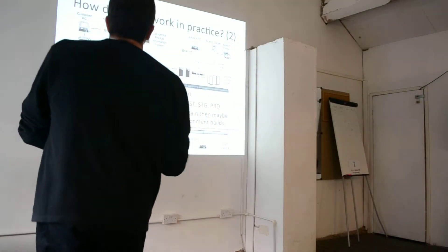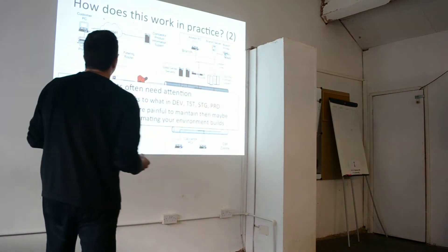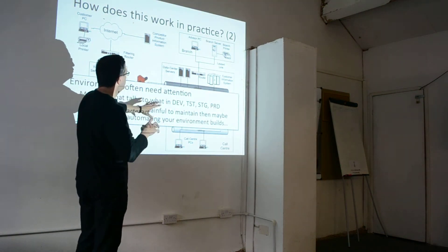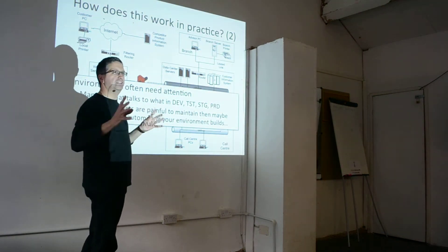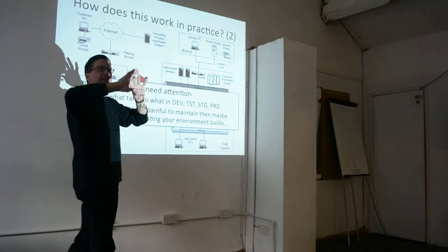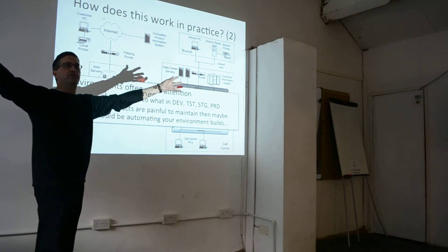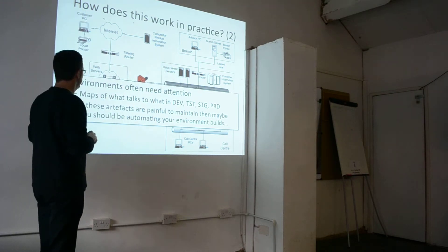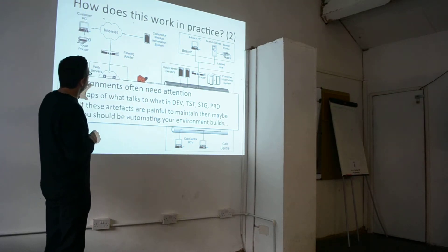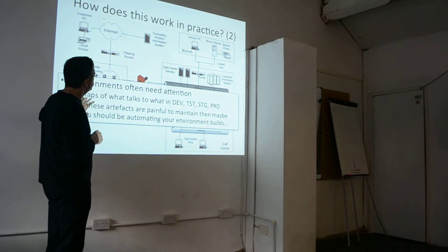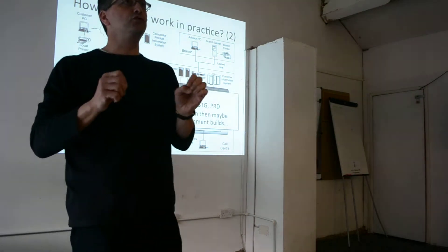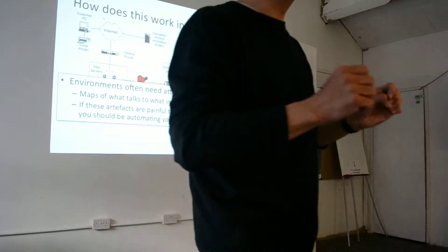Another area that often needs attention is environments. Maps of what talks to what in dev, test, staging, production. Again, this is a big 'here be dragons' area for a lot of people — 'we don't know what happens to it.' If updating these artifacts and keeping them up to date is painful, maybe it's time you automated your environments.